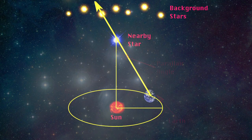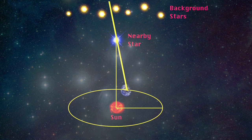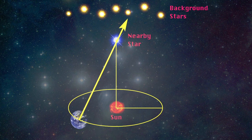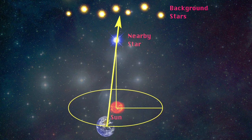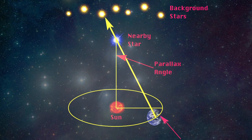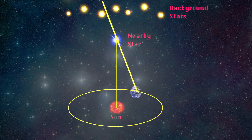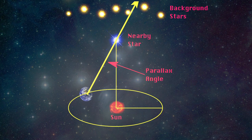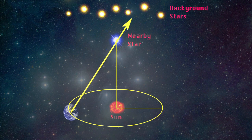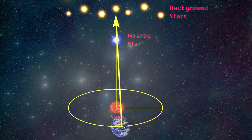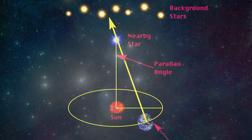To use parallax to measure the distance to stars, astronomers take advantage of the fact that Earth is constantly changing position as it orbits around the Sun. As this animation shows, a star close to us will seem to shift position compared to the further stars. The closest stars to us are still very far away compared to anything in our solar system, so the parallax shift is very small — less than one arc second of a degree. But using telescopes and careful measurements, we can still measure this parallax angle.